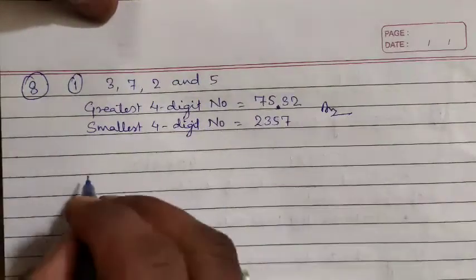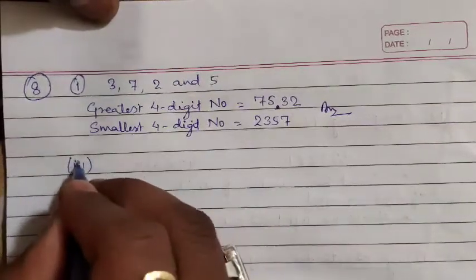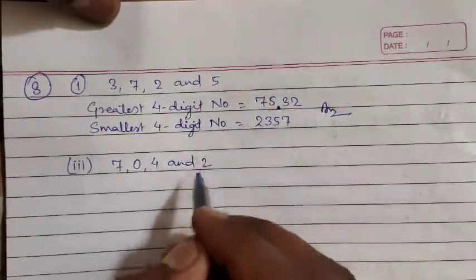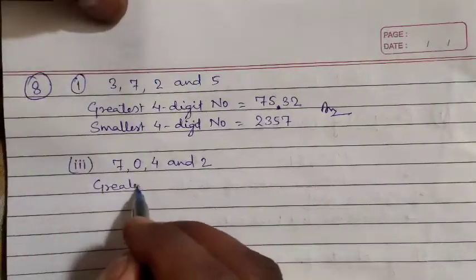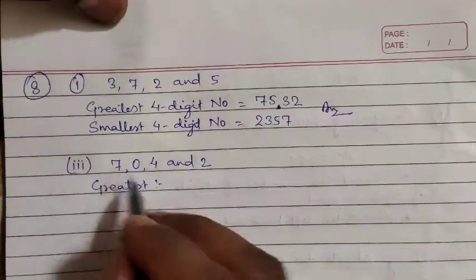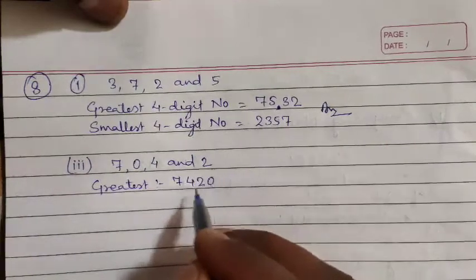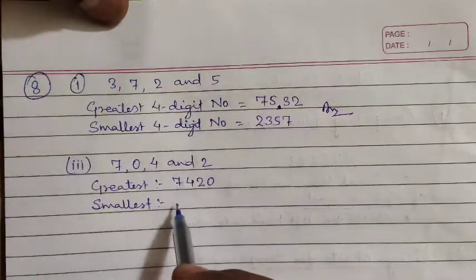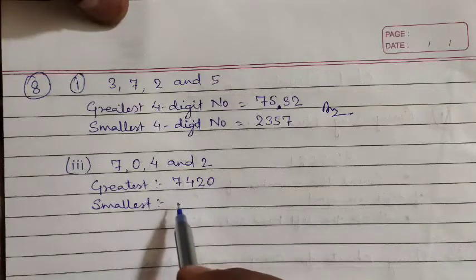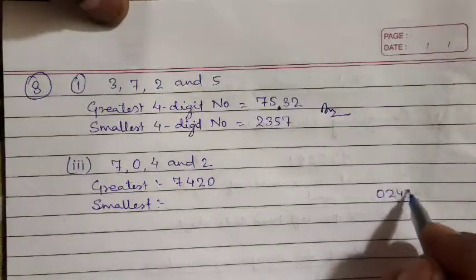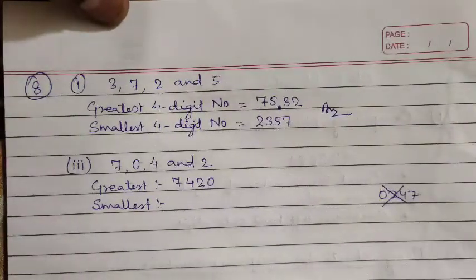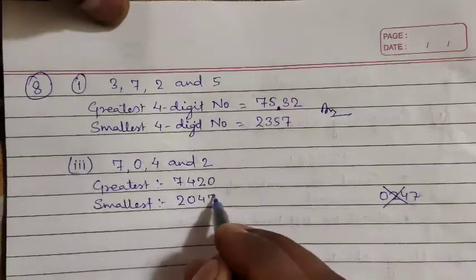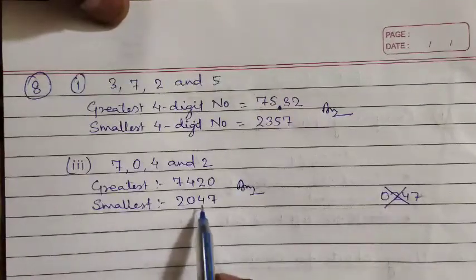One more example including 0: digits given are 7, 0, 4, and 2. For the greatest number, 0 doesn't matter — we write 7, 4, 2, 0 — giving 7420. But for the smallest, 0 cannot be written at the first place, because it would make it a 3-digit number. So we write the second-smallest digit first: 2, then 0, then 4, then 7 — giving 2047 as the smallest.